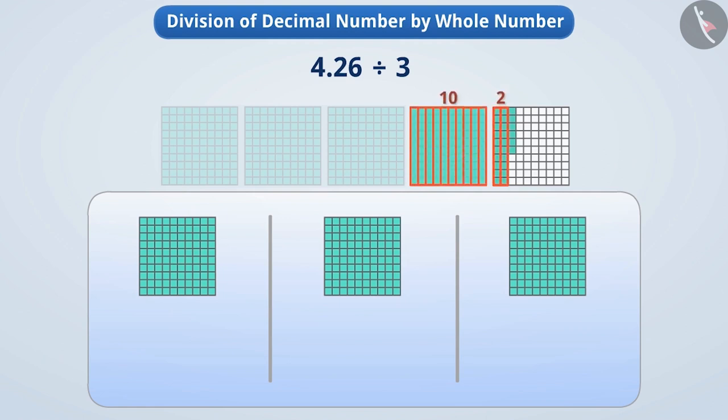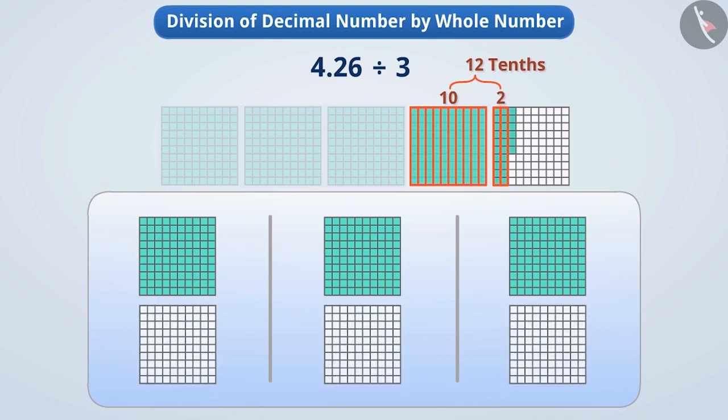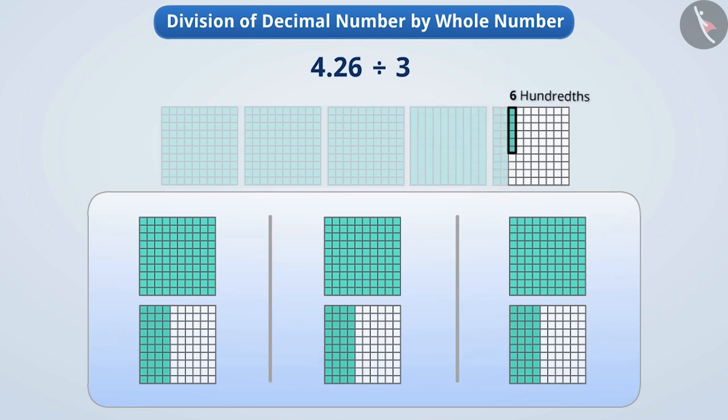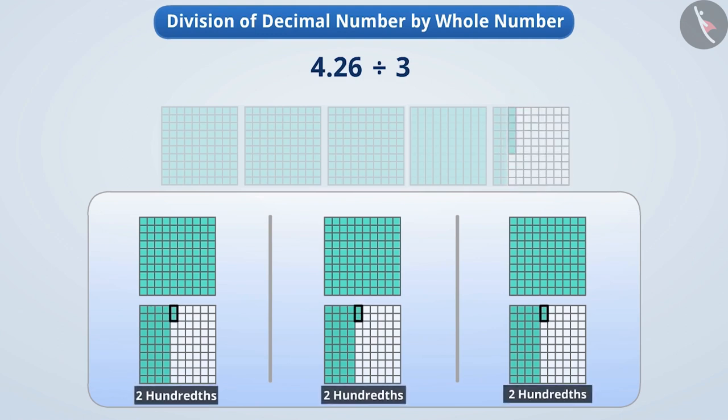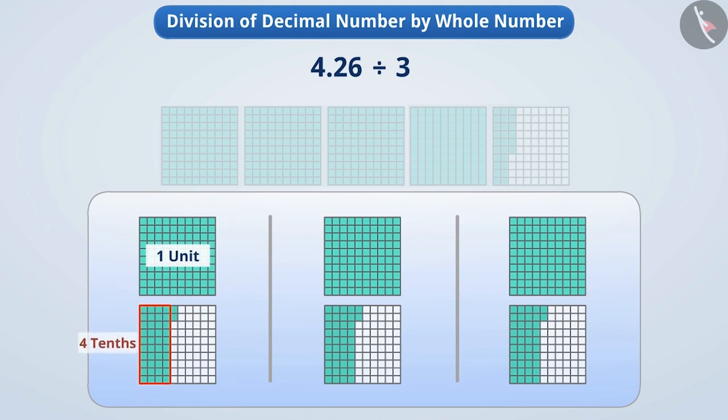Now here, there are a total of 10 plus 2, which is 12 tenths parts. After dividing them into three equal parts, each part will have four tenths. We will also divide the remaining six hundredths into three equal parts. This will give two hundredths in each part. Now you can see that each part has one unit four tenths and two hundredths, so each part will be 1.42.